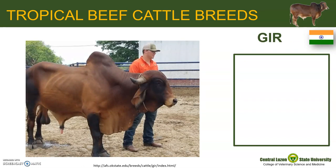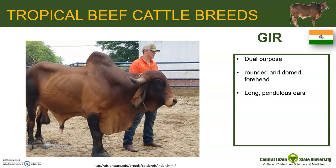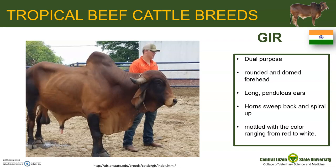The Gir is one of the principal zebu, or Bos indicus, breeds in India and is used for both dairy and beef production. The Gir is distinctive in appearance, typically having a rounded, dome-shaped forehead. They have long, pendulous ears and horns which sweep back and spiral up. The Gir are generally mottled with color ranging from red to white.